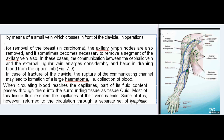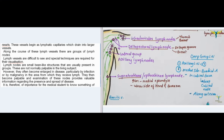When circulating blood reaches the capillaries, part of its fluid content passes through them into surrounding tissue as tissue fluid. Most of this tissue fluid re-enters the capillaries at their venous ends, but some is returned to the circulation through a separate set of lymphatic vessels. These begin as lymphatic capillaries draining into larger vessels along which there are groups of lymph nodes. Lymph nodes are small bean-like structures usually present in groups, not normally palpable in the living subject.